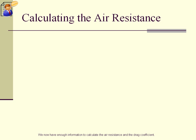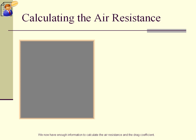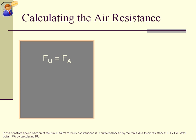We now have enough information to calculate the air resistance and the drag coefficient. In the constant speed section of the run, Usain's force is constant and is counterbalanced by the force due to air resistance. Fu equals Fa. We'll obtain Fa by calculating Fu.